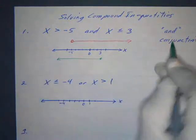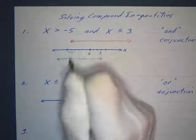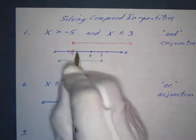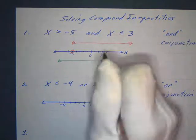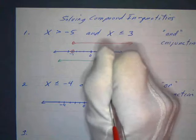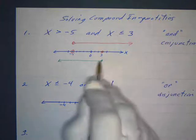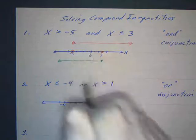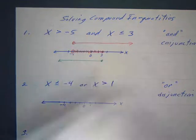For x less than or equal to three, we place a filled dot at three and shade to the left. Since this is an 'and' (conjunction), we look for where both conditions overlap — that's everything to the right of negative five and up to and including three. That overlapping region is your solution.